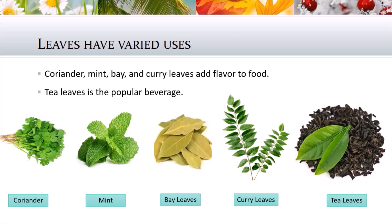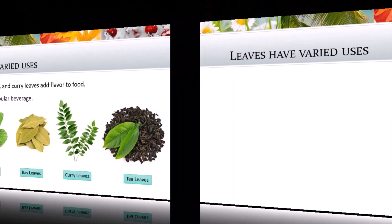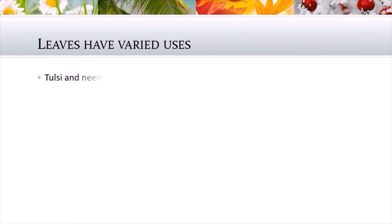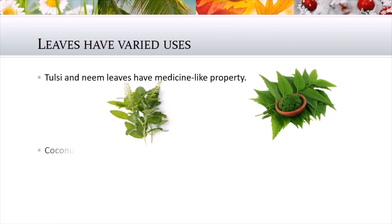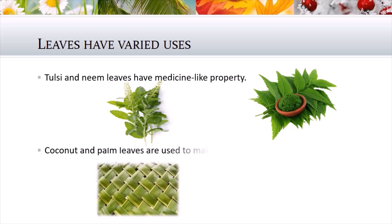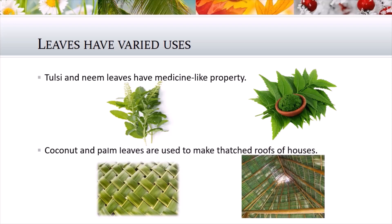Tea leaf is a popular beverage — a beverage is something which we drink. The leaves of the tea plant are dried and used as tea. Tulsi and neem leaves have medicinal properties. Coconut leaves are used to make thatched roofs for houses, which you might have seen in villages.